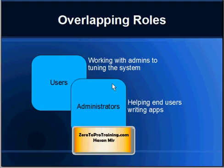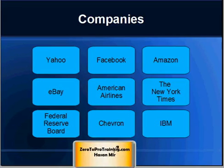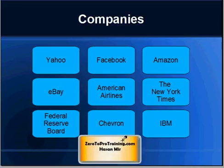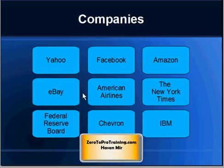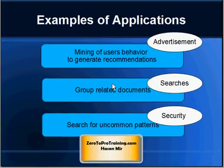Companies heavily using Hadoop include Yahoo (the largest user), Facebook (the second largest), Amazon, eBay, American Airlines, the New York Times, Federal Reserve Board, Chevron, and IBM. In terms of industry areas, Hadoop is used in social media, retail, financial services, search tools, and government and intelligence agencies. Example applications include mining user behavior to generate recommendations (using the Mahout tool), grouping related documents for search, and detecting fraud through uncommon pattern analysis.